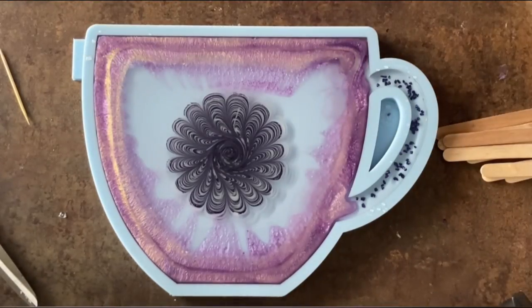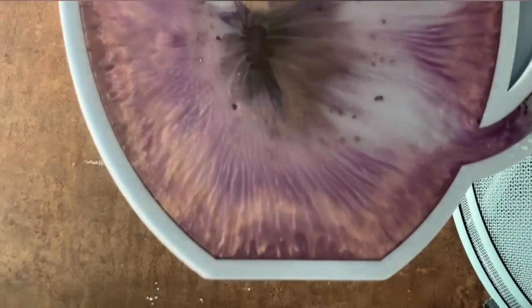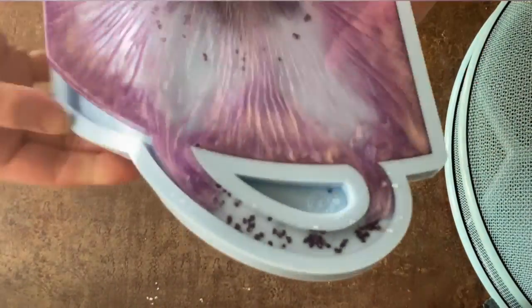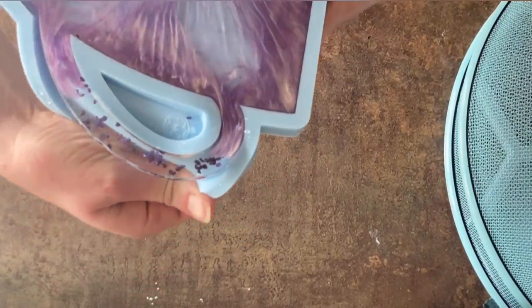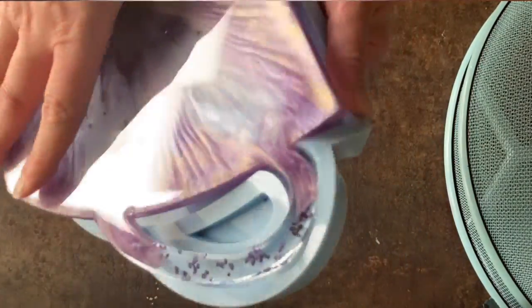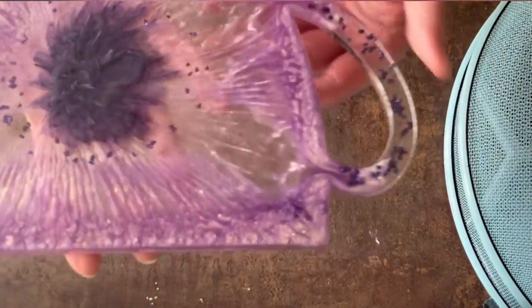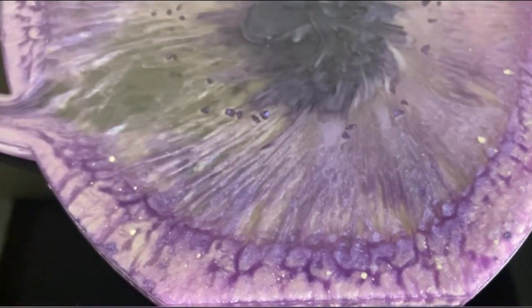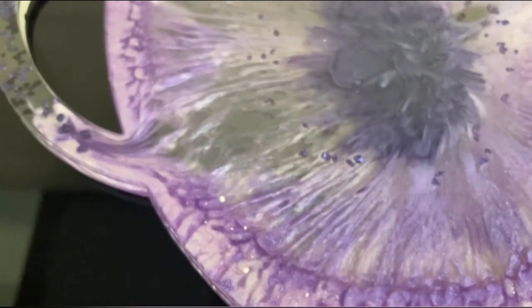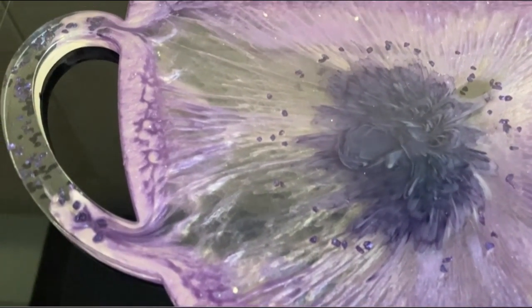And you can see also the resin starts to drag into the center. Anyway, this is the next day, actually today, and time for demolding. You can see the clear part where the handle is and actually also the pattern where the handle is - that the resin didn't drag into the center. And what's funny enough also, you will see it now, the flower got drawn to the side of the handle. It's very interesting, so I think I should really pour the handle not in clear.